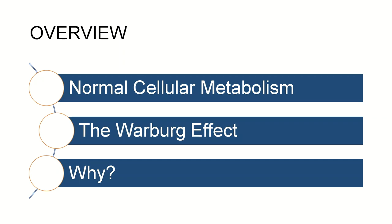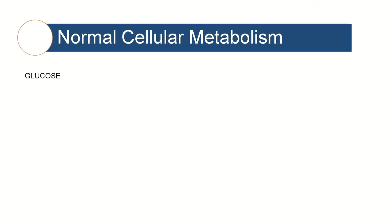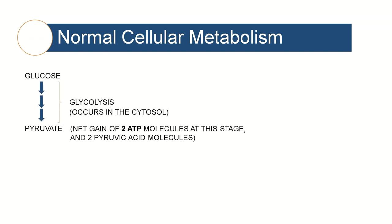I'll then talk briefly about the Warburg effect itself, and lastly about why this process may happen. So we start with glucose, which we get fundamentally from our diet from carbohydrates, which are then transformed into glucose. Glucose moves into the cell by facilitated diffusion, and in the cytosol of the cell it undergoes a process called glycolysis, which literally translates into sugar splitting. This process is used basically for the production of energy and ATP. There are many steps in the glycolysis pathway such as the conversion of glucose into glucose 6-phosphate, fructose 6-phosphate, or 1,6-bisphosphate and so on.